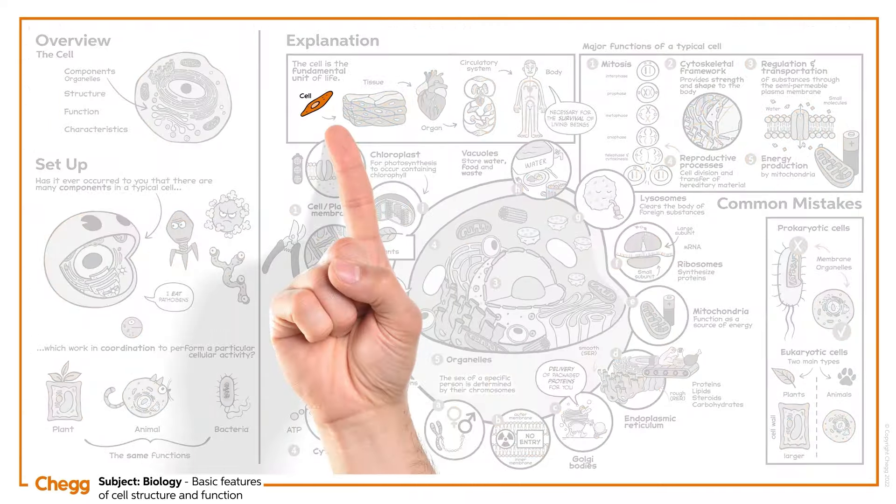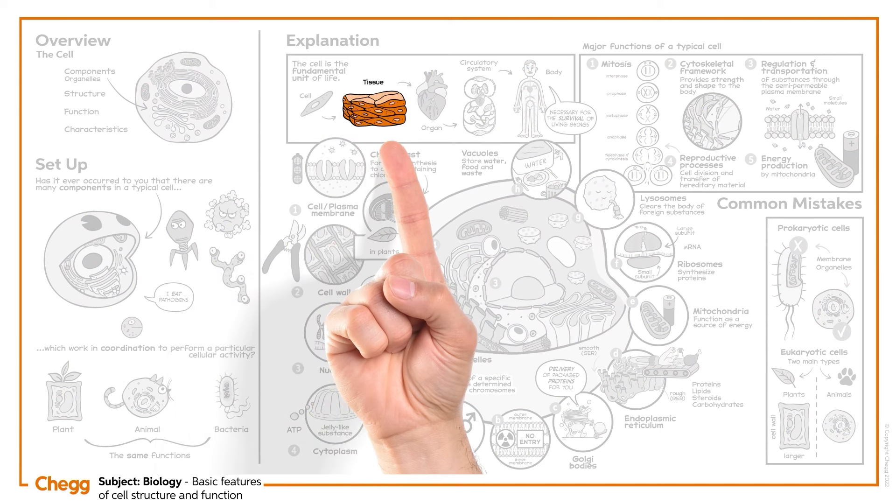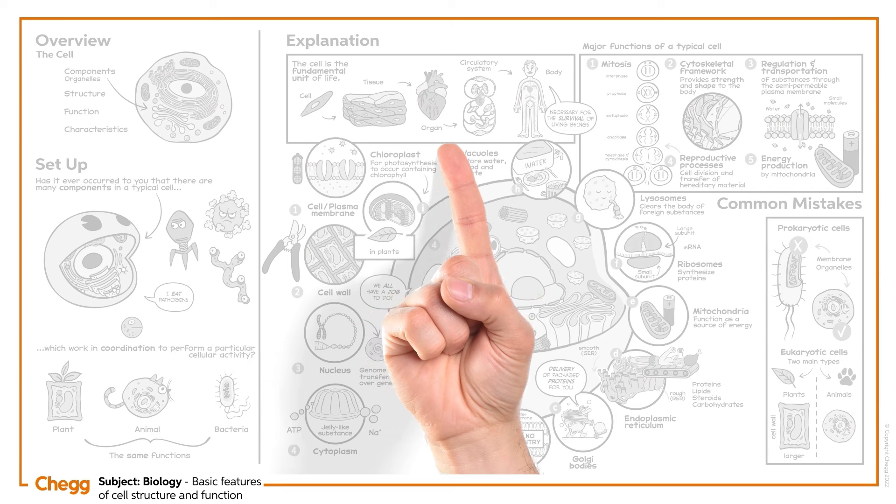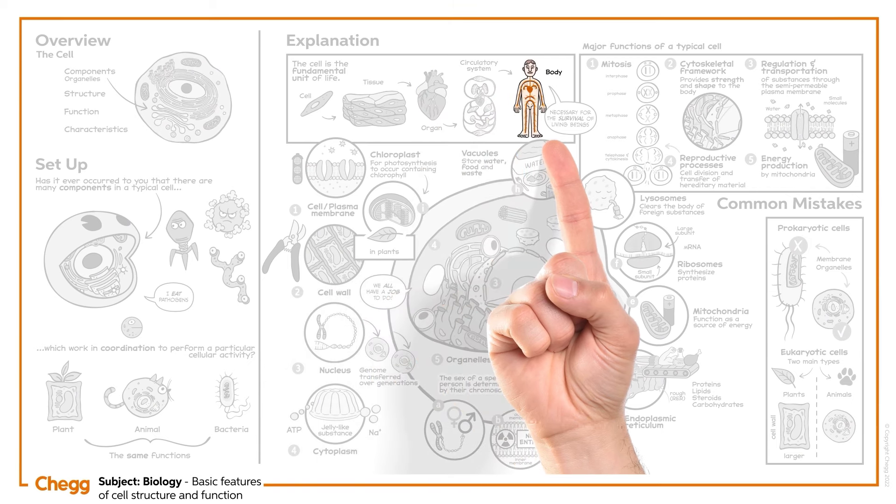In conclusion, the cell, despite being the smallest functional and structural unit of a living being, is competent enough to perform all life processes that are essential for the survival of that being.